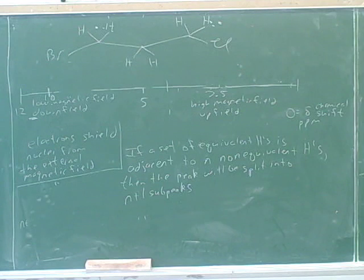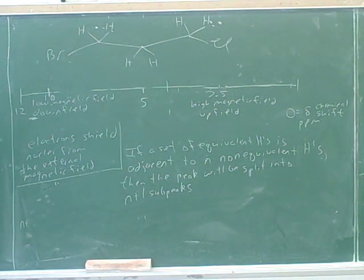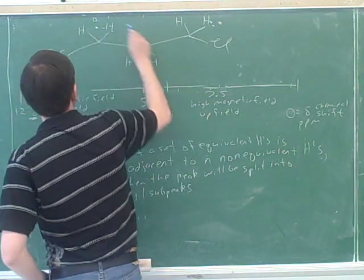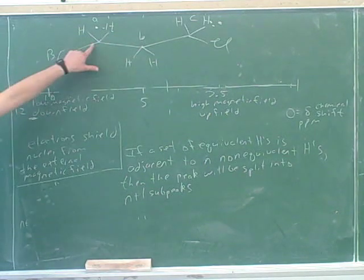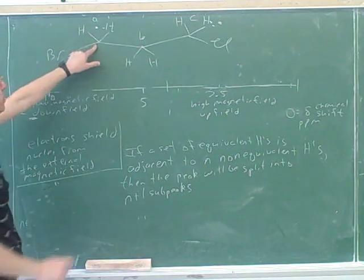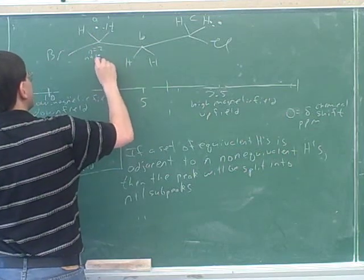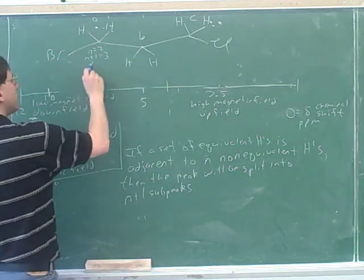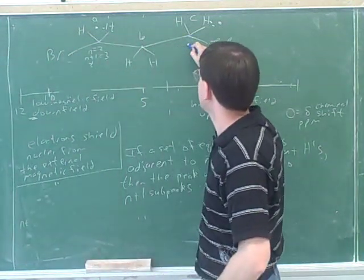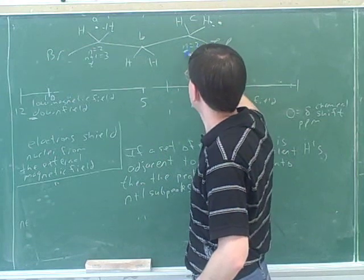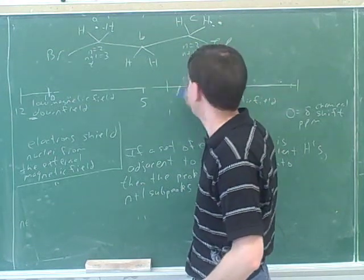Let's figure out how many peaks here. We have three groups. There are no stereocenters here, so we don't have to worry about the CH2 exception — these are just three different groups. What would n be for this group? Two. So n plus 1 would be three, and this would be a triplet. And for the group on the right, what would n be for group C? Two. So n plus 1 is three, and this splitting would also be a triplet.